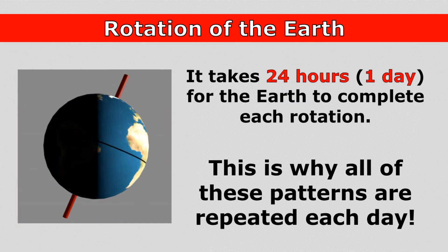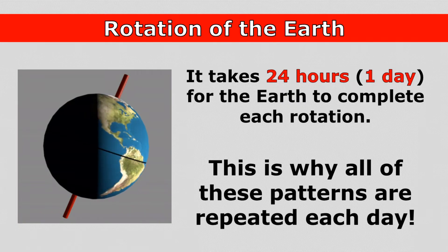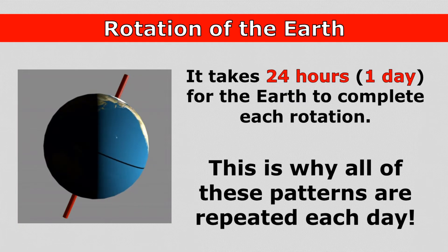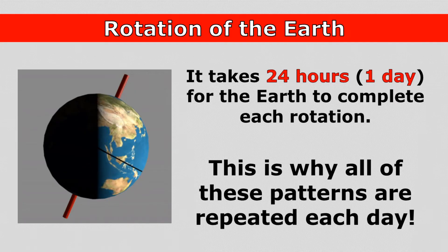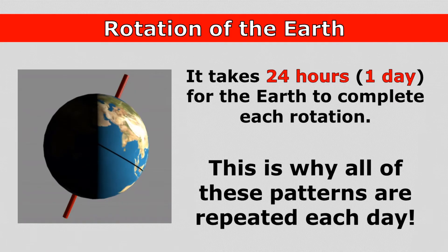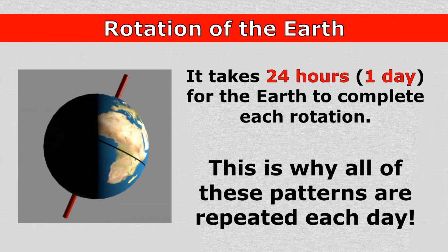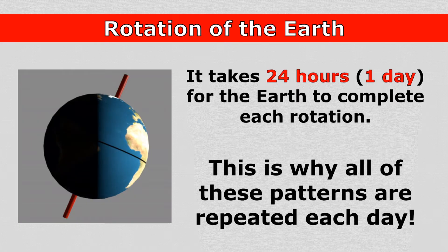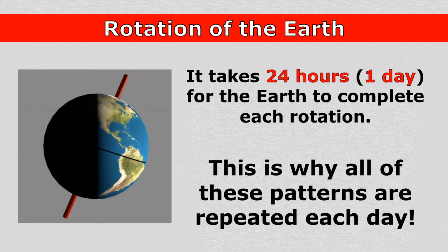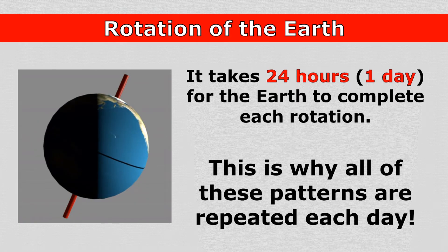It takes 24 hours, or one day, for the earth to complete each rotation. This is why all of these patterns — the cycle of day and night, the apparent motion of the sun, and the changing appearance of shadows — are repeated each day.